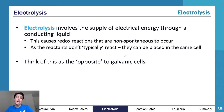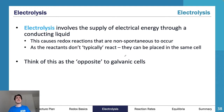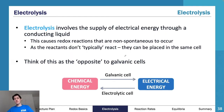Now we know how to do it through electrolysis. Electrolysis involves the supply of electrical energy through a conducting liquid, causing non-spontaneous redox reactions to occur. Since the reactants don't typically react, they can be placed in the same cell without worry. Think of this as the opposite of galvanic cells: galvanic converts chemical energy to electrical energy, while electrolytic cells convert electrical energy back into chemical energy.